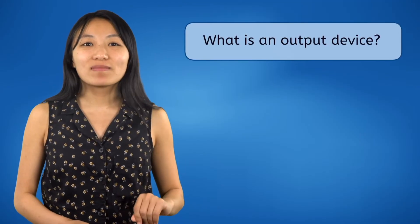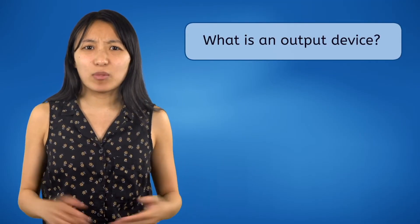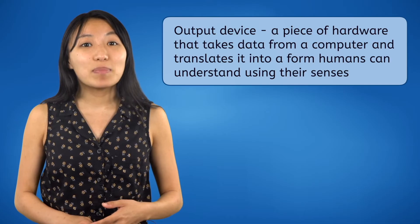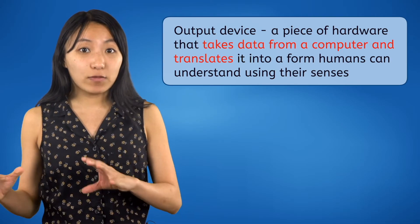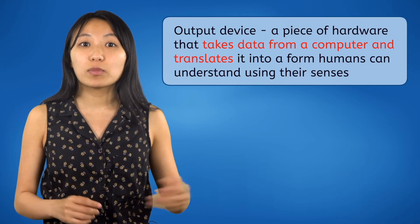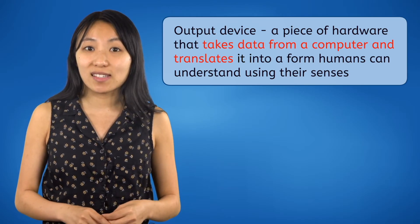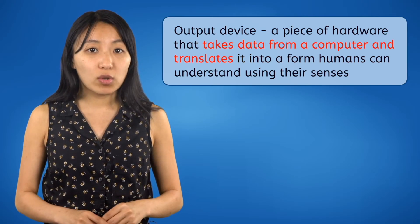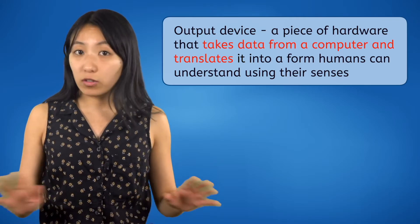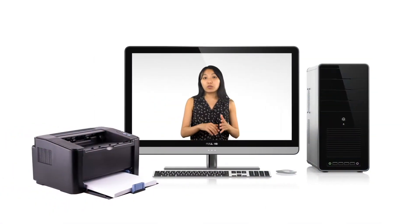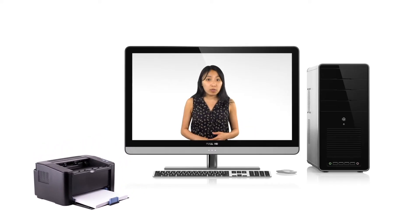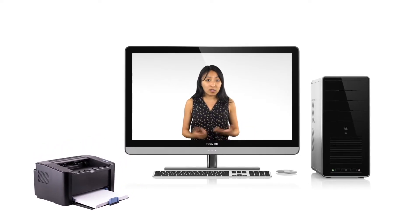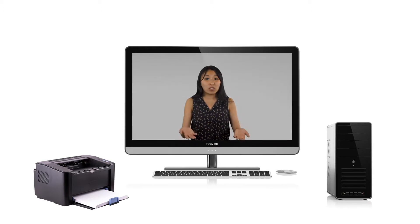So first things first, what exactly is an output device? An output device is a piece of hardware that takes data from a computer and translates it into a form humans can understand using our senses. It's important to note that output devices translate data from a computer — they aren't the computer itself. If you disconnect your computer from a printer, it won't start printing things all on its own, and a screen won't show anything unless a computer tells it what to show.